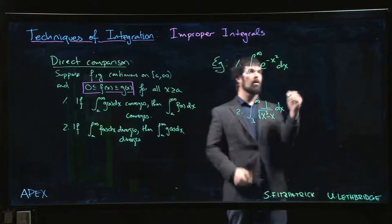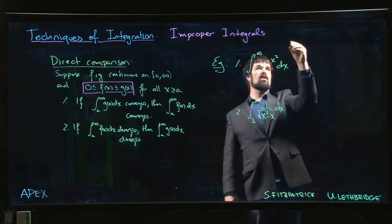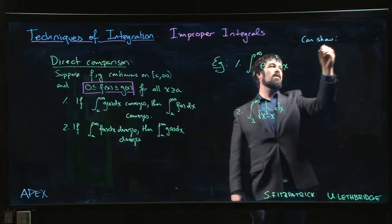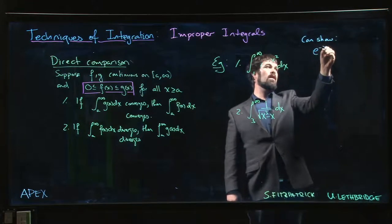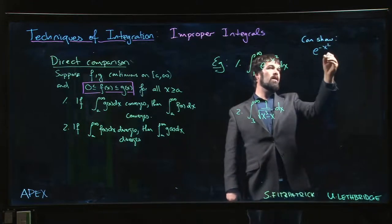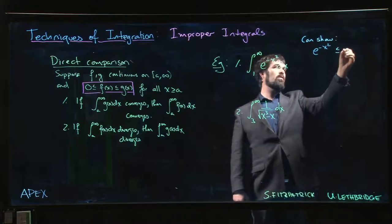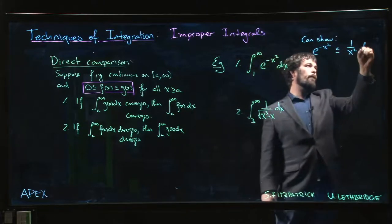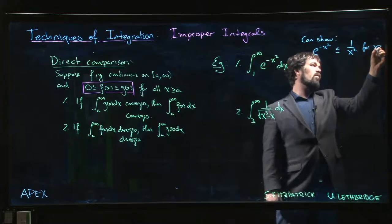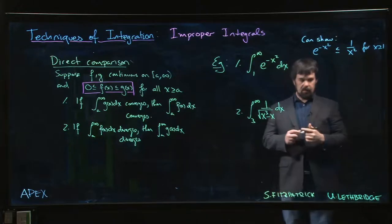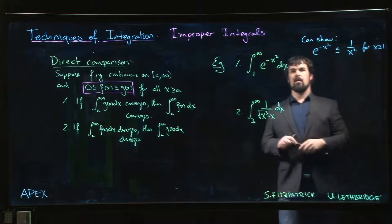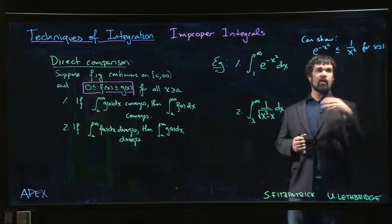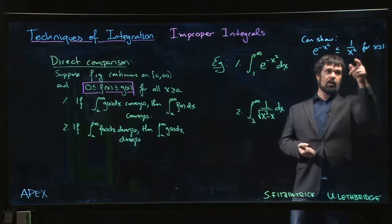So the textbook says that you can show that e to the minus x squared is always less than or equal to 1 over x squared for x bigger than or equal to 1. And we know that the integral for 1 over x squared converges. It's p series with p bigger than 1.